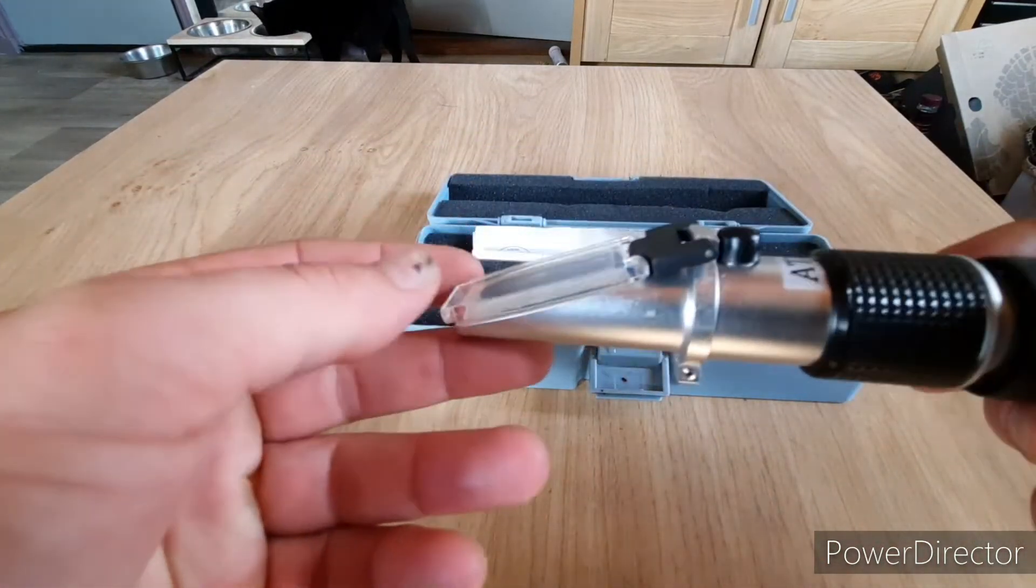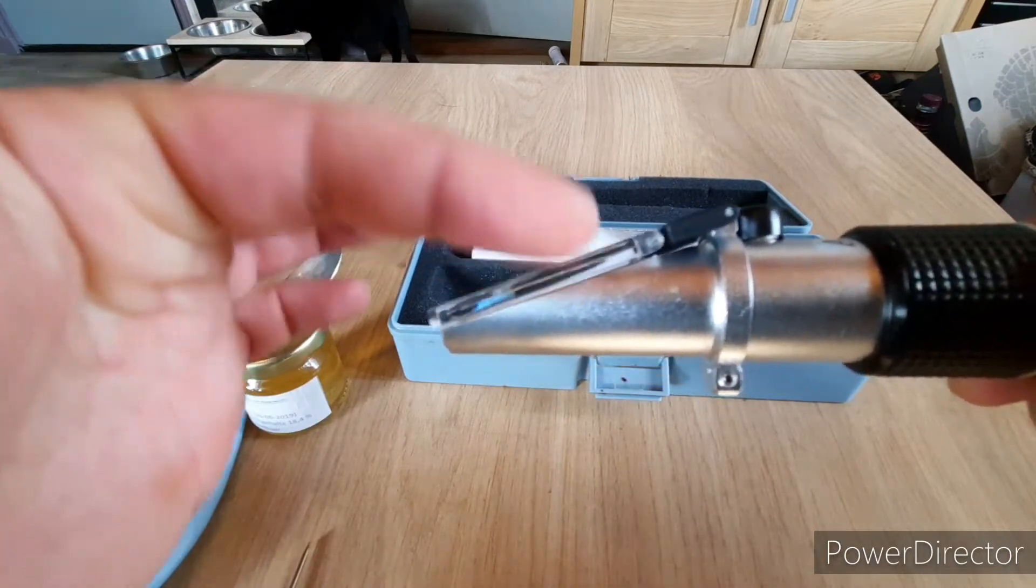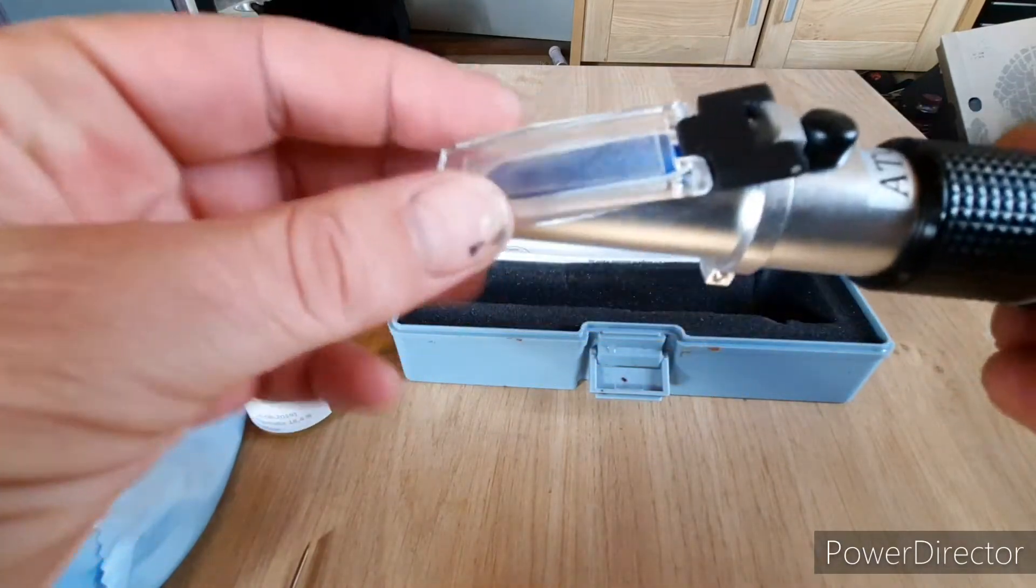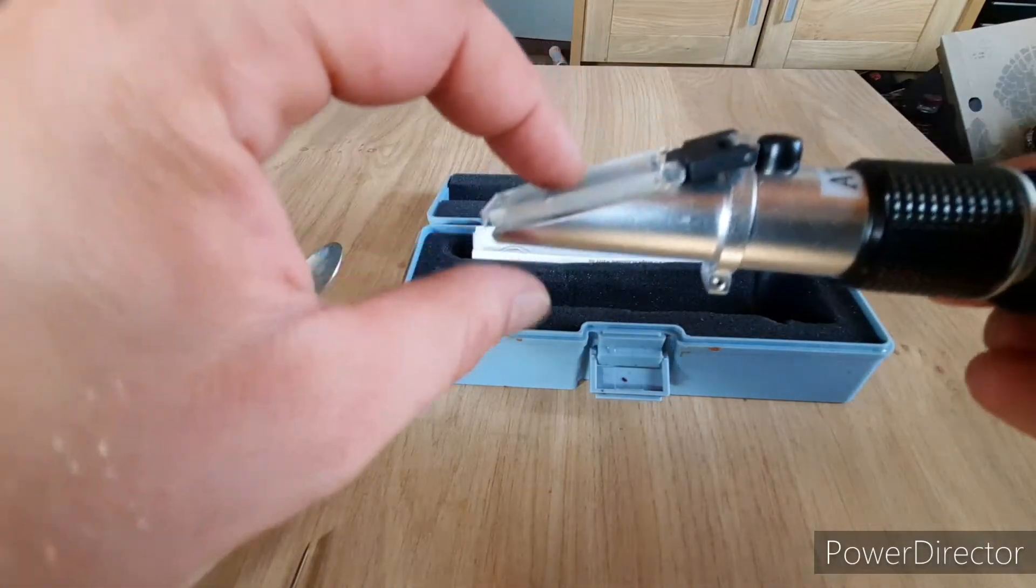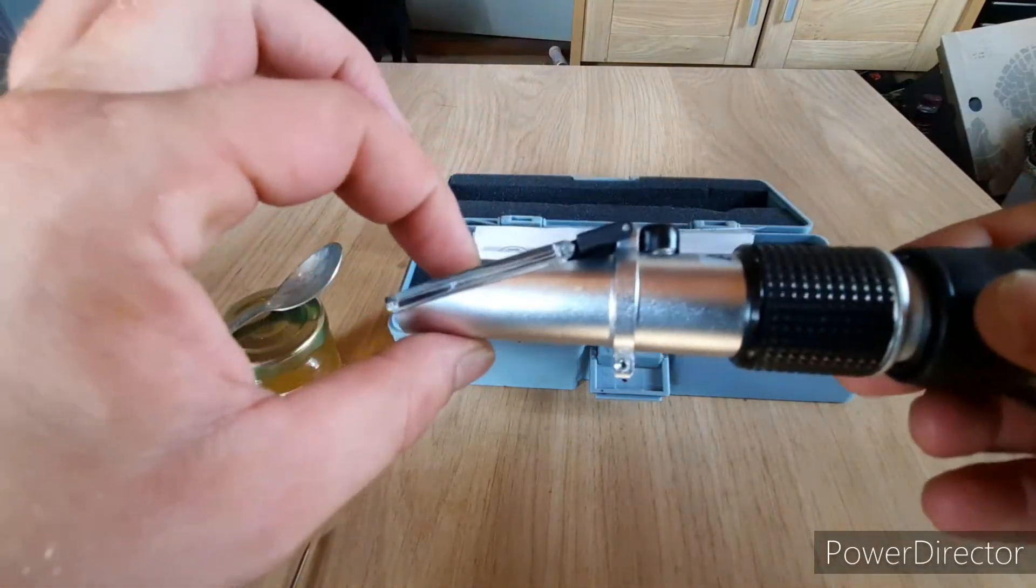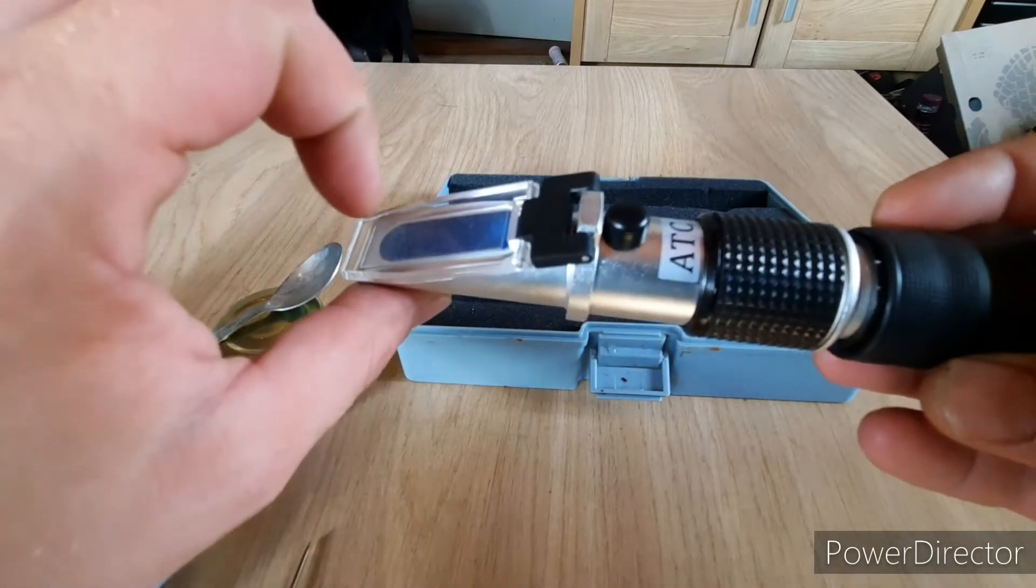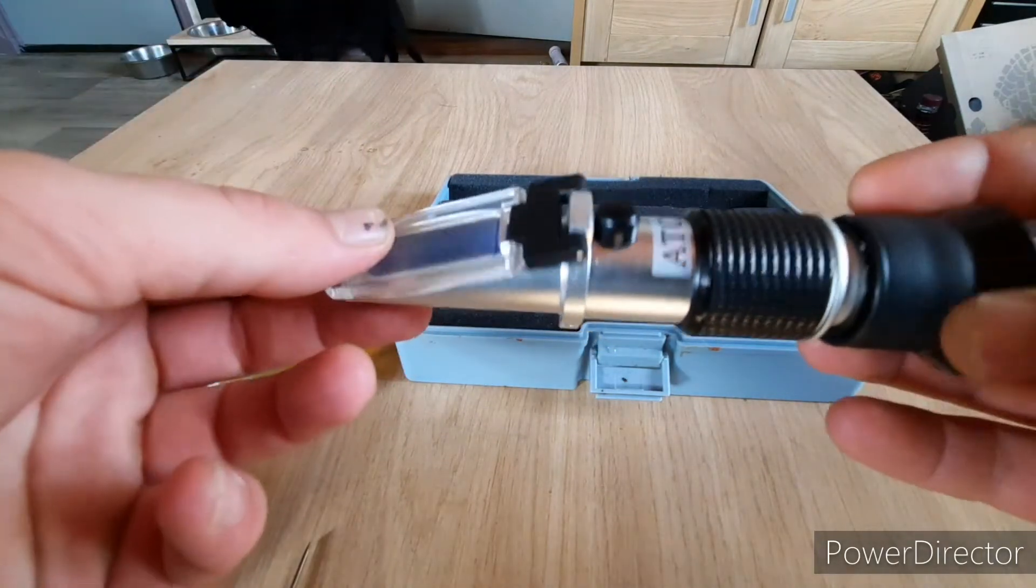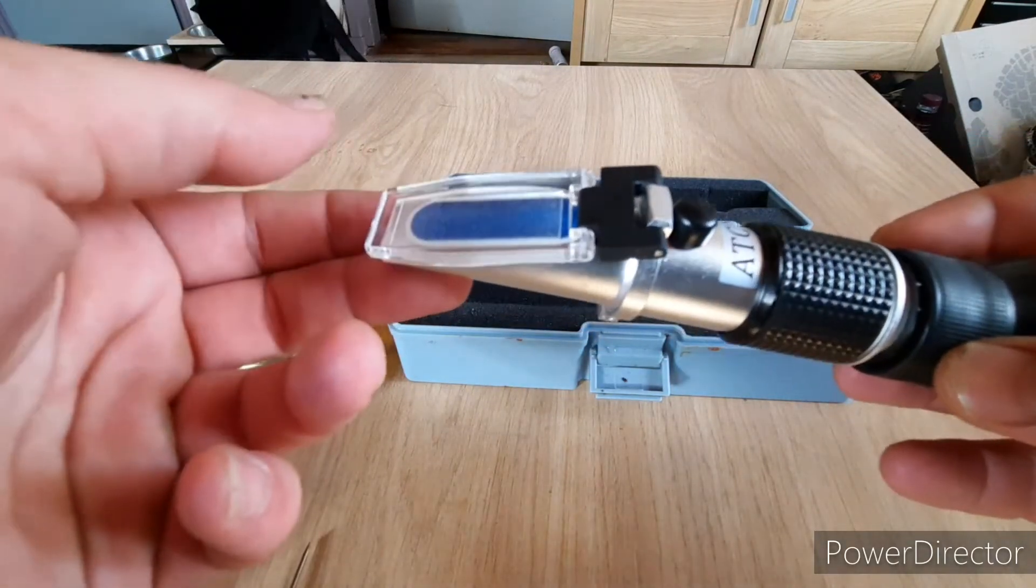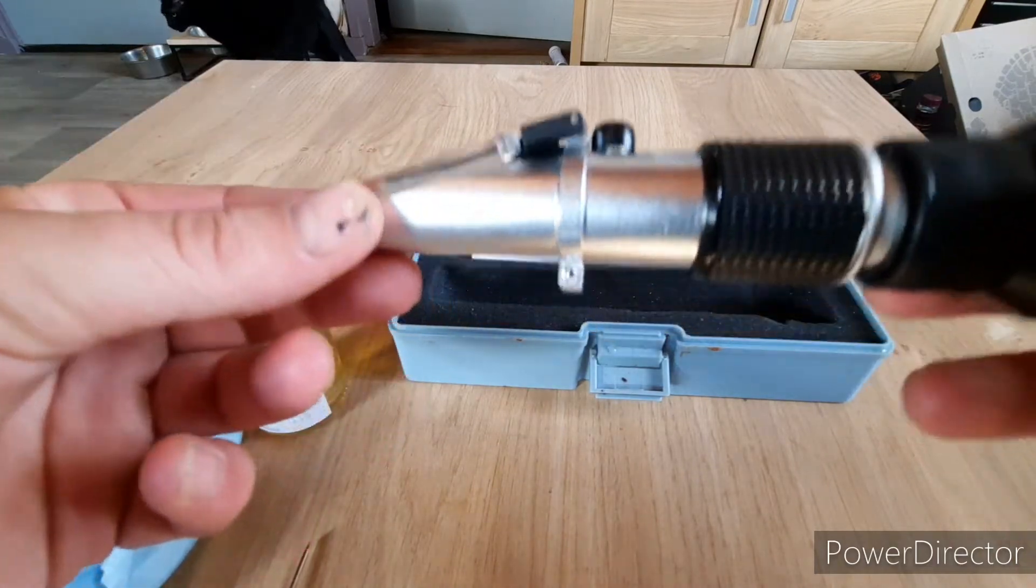You put the fluid here, close it up, look into the lights and then the refractometer will tell you in this case how much sugar there is in the content. You've also got refractometers for alcohol, for sugar, for many different things, but this is one that's specifically for use with honey.